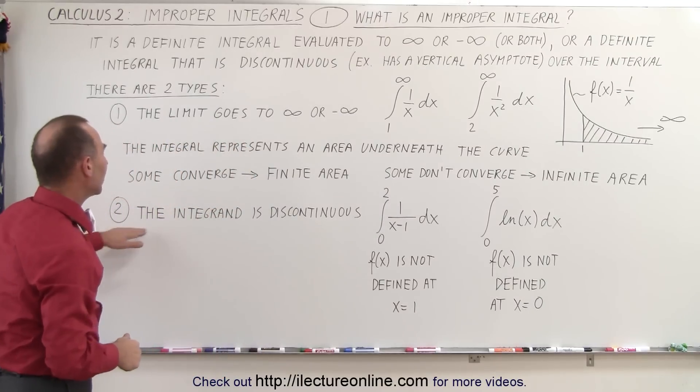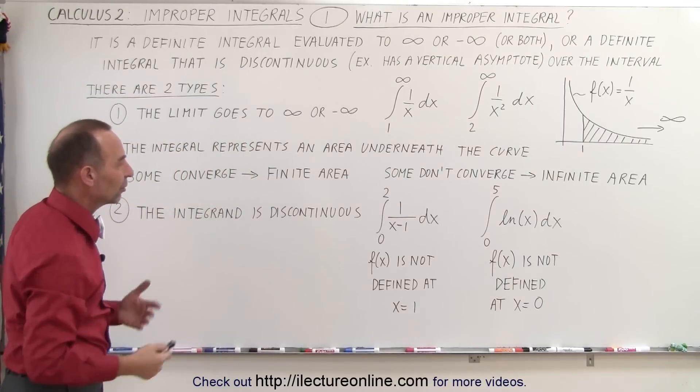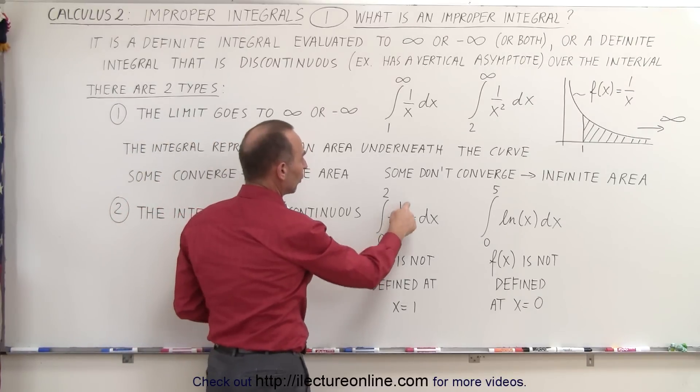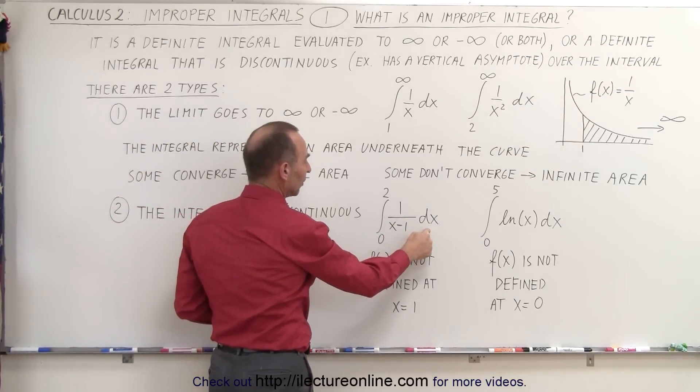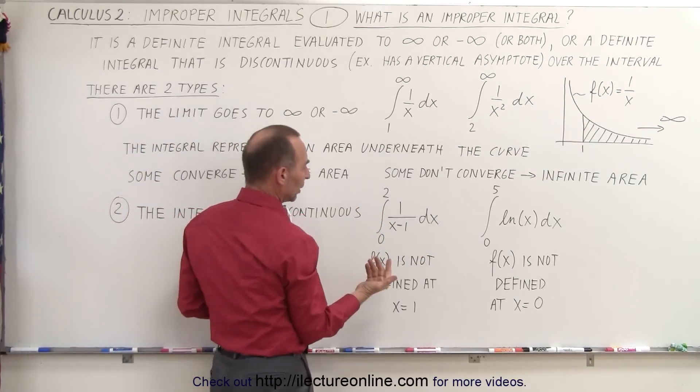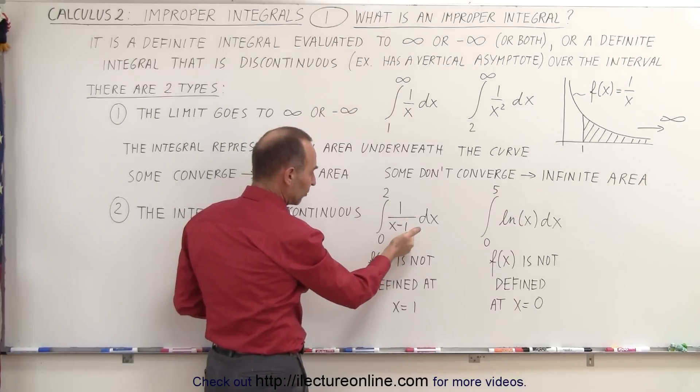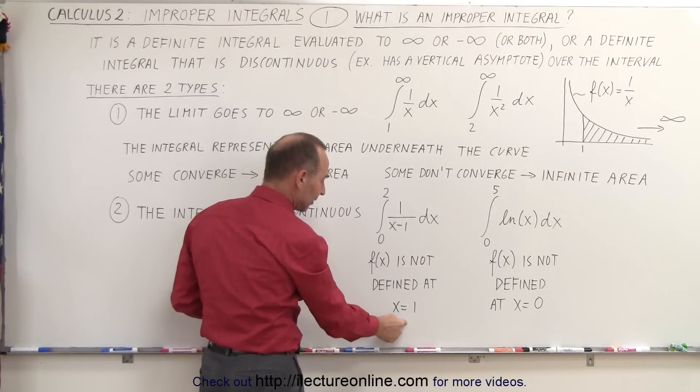The second type is where the integrand is discontinuous. Here's a few examples. If we try to integrate 1 over x minus 1 dx, from 0 to 2, we then realize that the function 1 over x minus 1 is not defined at x equals 1.